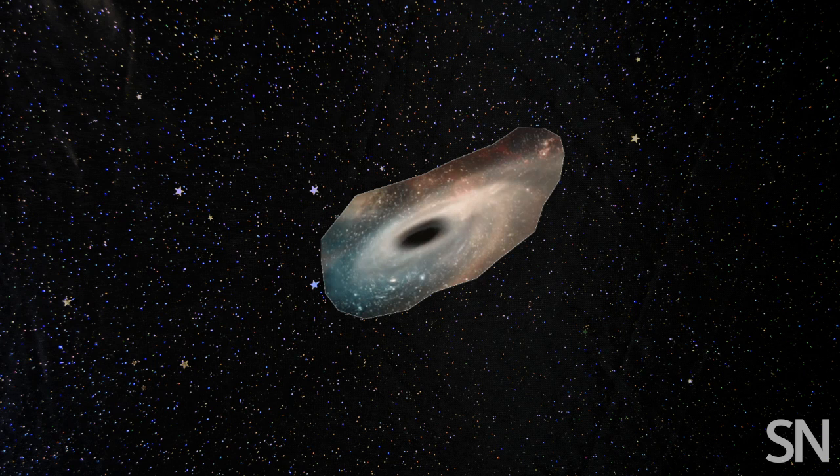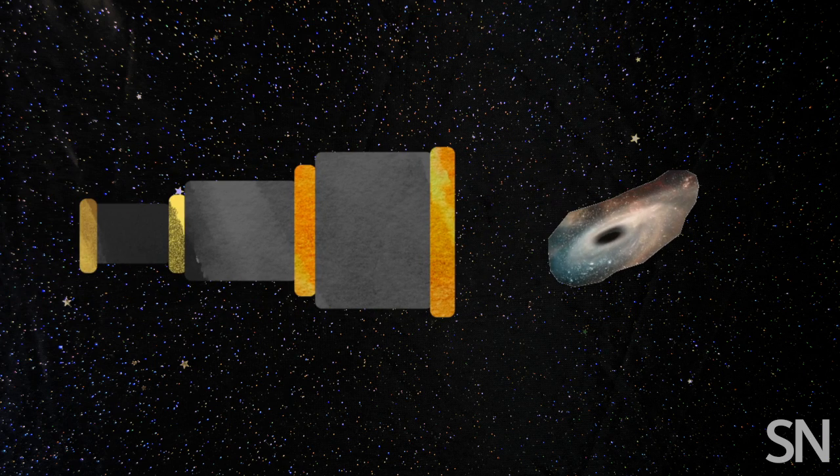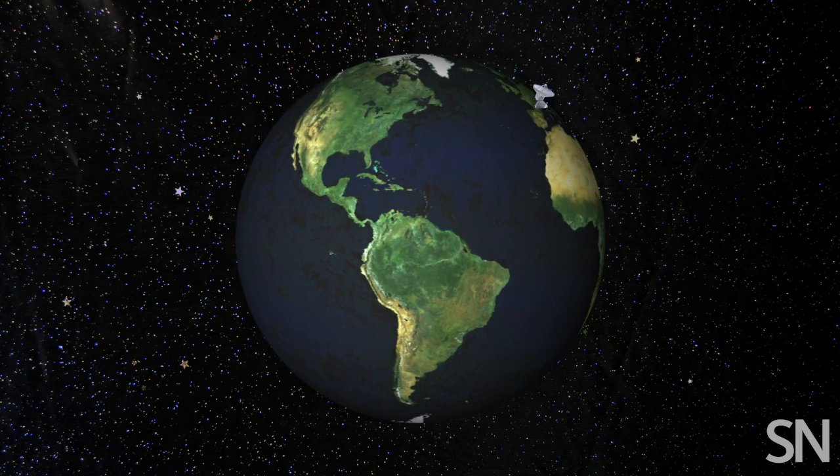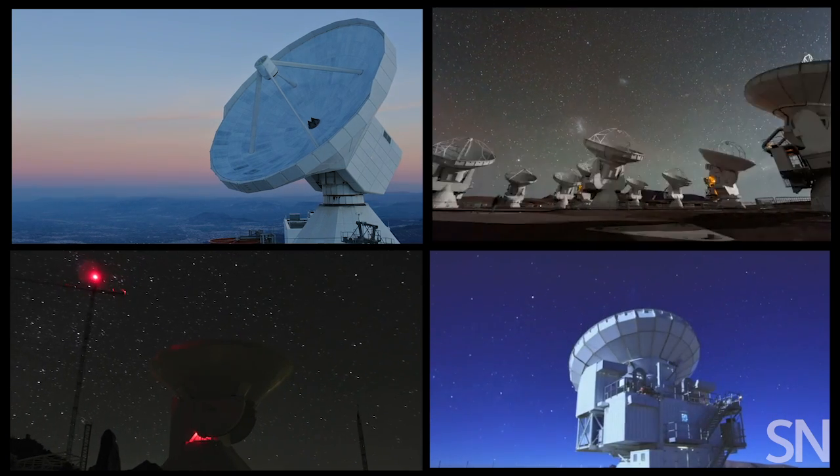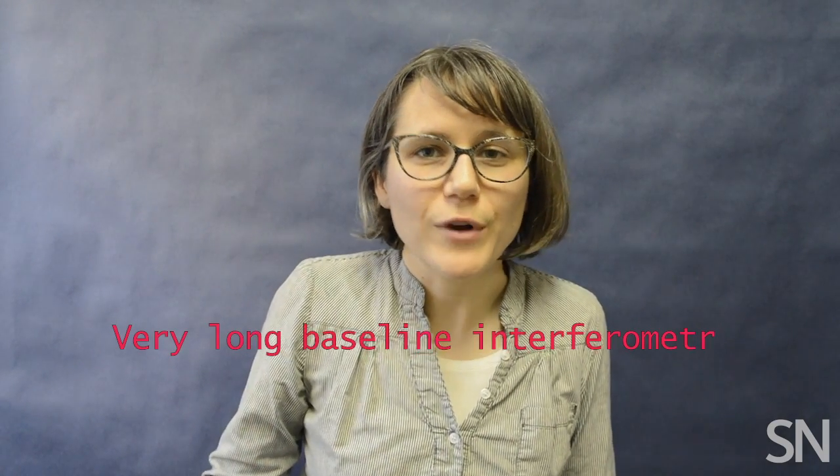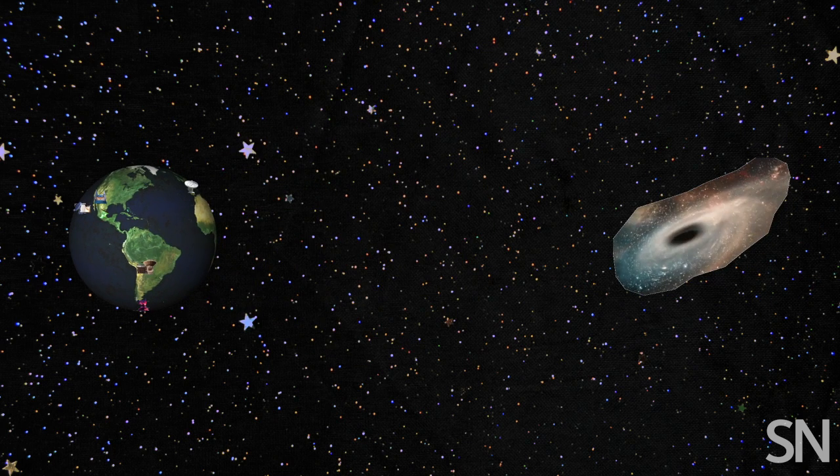Taking such a picture would require a really big telescope. The EHT uses a lot of smaller radio telescopes instead. They work together using a technique called Very Long Baseline Interferometry. And what that does is it makes those telescopes kind of act like one giant telescope.